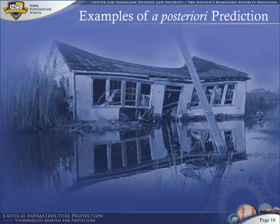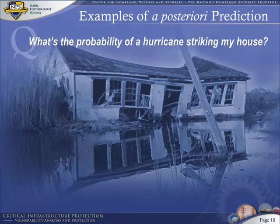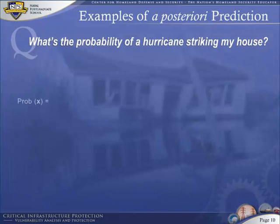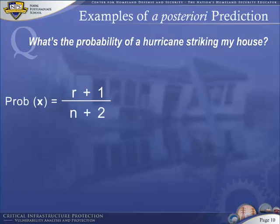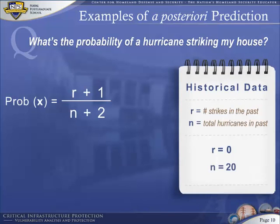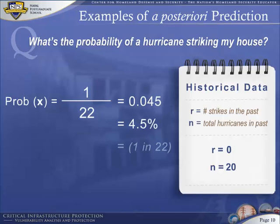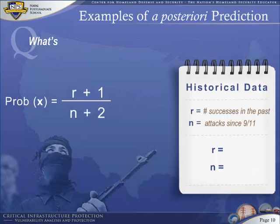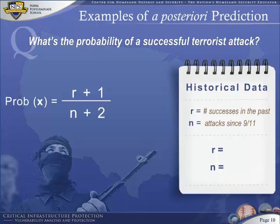Here's an example of an a posteriori prediction: what is the probability of a hurricane striking your house? Using Laplace's approach, we collect historical data. Suppose historical records show that over the past 20 years, zero hurricanes have struck my house. The probability of a future hurricane striking my house next year is 1 divided by 22, or 4.5%. Now let's try that on terrorist data collected between the 9-11 attack and 2012. In this 11-year period, 26 attacks were attempted and 3 succeeded. Plugging these numbers into Laplace's formula, we get 4 divided by 28, or 14.3%.